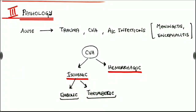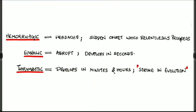Thirdly, the pathology. Mostly it will be an acute event. If it is an acute event, we have to suspect trauma, cerebrovascular attack, or acute infections like meningitis and encephalitis. Chronic events can be like tumors growing in the cortex. Regarding CVA — cerebrovascular attacks — it can be an ischemic event or a hemorrhagic event. The ischemic events can be embolic or thrombotic. If it is a hemorrhagic event, there will be severe headache of sudden onset that progresses rapidly. If it is an embolic event, it is of abrupt onset and develops in seconds. Regarding the thrombotic event, it develops in minutes to hours, and there is stroke in evolution.